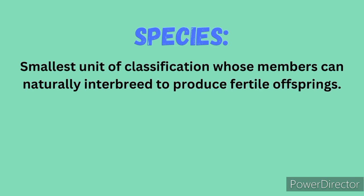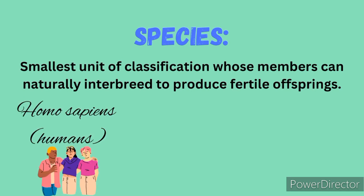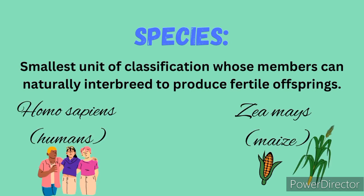From this definition, there are two things of importance. Number 1 is that organisms belonging to the same species have the ability to naturally mate with one another without any intervention whatsoever to produce fertile offsprings. When two organisms of the same species successfully interbreed and their offspring goes on to reproduce offsprings of its own, this is what is termed a fertile offspring.